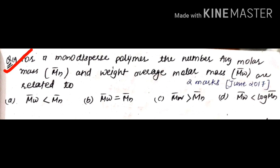Next question from June 2017 for two marks is the same type again: for a monodisperse polymer, how are M̄N and M̄W related? As I explained, a monodisperse polymer is a homogeneous system. In it, the poly-dispersity index M̄W / M̄N = 1, meaning M̄W equals M̄N. So B is the correct answer.